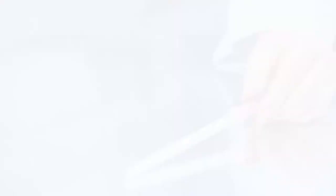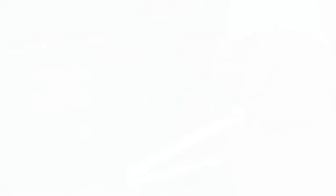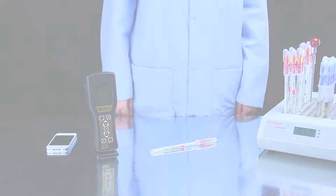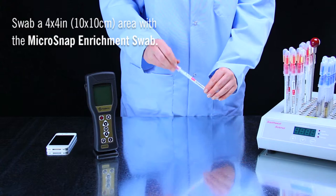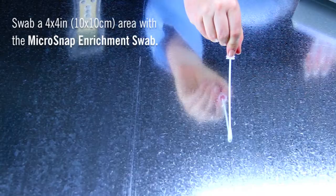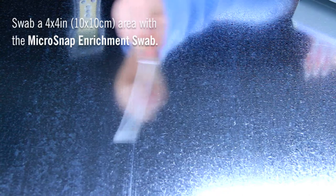For environmental samples, you may collect a sample just like you would with an ATP test. Remove the detection swab device from the tube. Swab a 4x4 inch square area, applying sufficient pressure to create flex in the swab shaft and rotating to collect sample on all sides of the swab tip. Replace the swab in the tube.